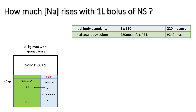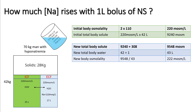The first question: how much will sodium rise when you give a one-litre bolus of saline? Consider a 70 kg man with total body water of 42 litres — ICF 25 litres, ECF 17 litres, and sodium of 110 mEq/L. His initial body osmolality is 220 mOsm/L, so total body solute is 220 × 42 = 9,240 mOsm.